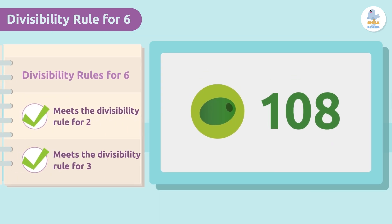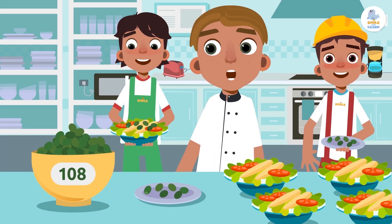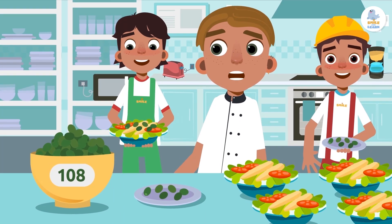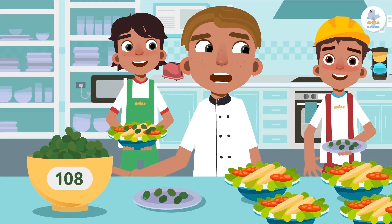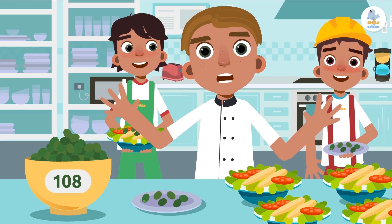Now we know that 108 is divisible by two and also by three. That means it is also divisible by six. So when we add olives to the salads, each salad will have six delicious olives.